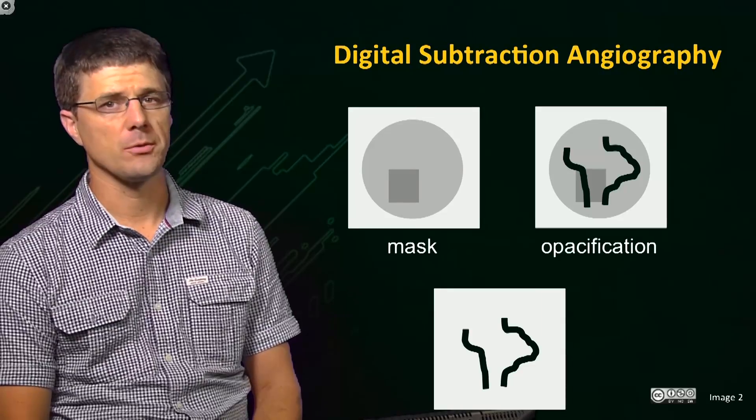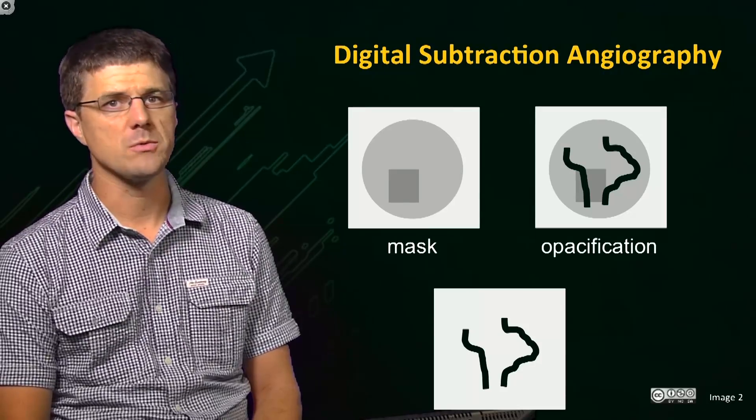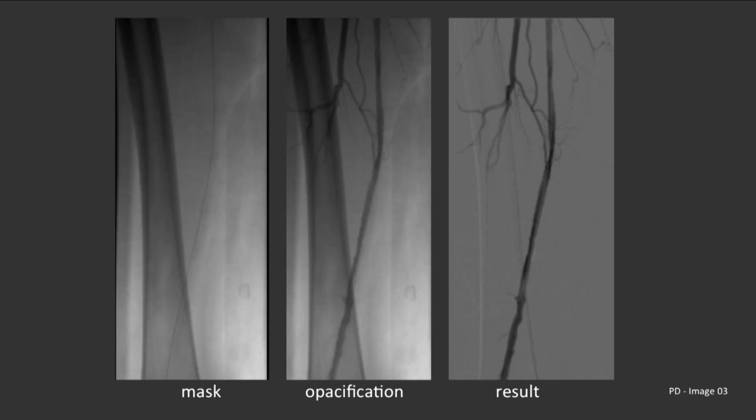Only parts of the image that are different between the two acquisitions are shown in the final output image. In this example, the final image will only retain the two black structures that appeared in the opacification image. The typical process is first to acquire a normal image, also called a mask image, that we can see on the left. This image is stored in memory and then a second image is acquired once contrast has been injected. This second image is often called the opacification image. These two images can then be linearly subtracted from each other on a pixel per pixel basis to create an output image.